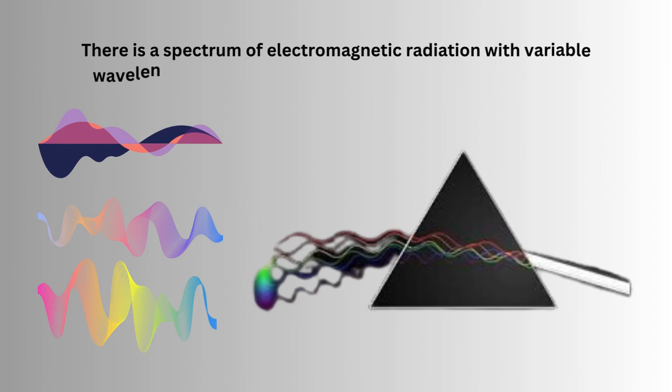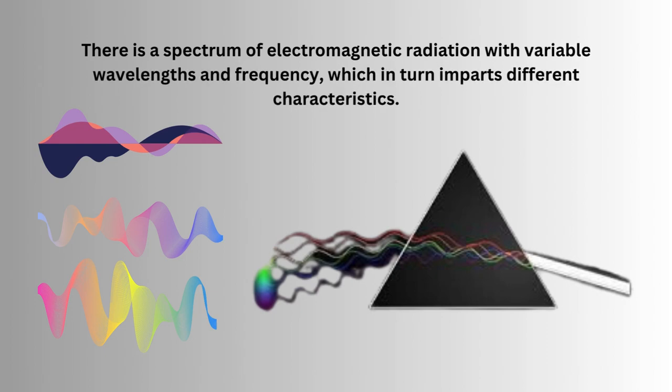There is a spectrum of electromagnetic radiation with variable wavelengths and frequency, which in turn imparts different characteristics.